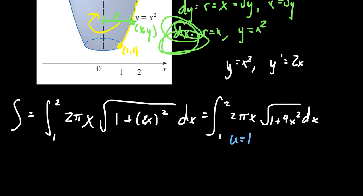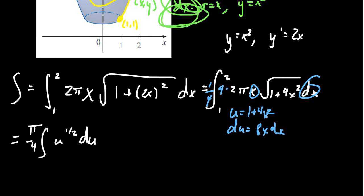If we take u to be 1 plus 4x squared, then du would equal 8x dx, which we have a dx, we have an x, and all we need is an 8 in front. We already have a 2, so times that by 4, and then divide by 4 to compensate for that. We can change our integral to have the format π/4 times the integral of the square root of u, so u to the 1/2, du. That's a pretty nice integral right there. Let's also change the bounds.